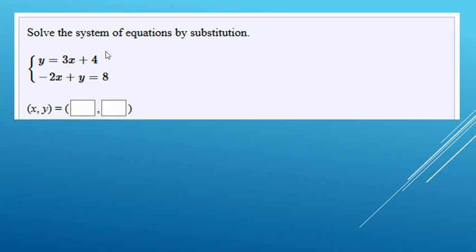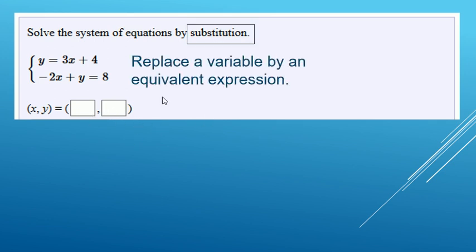All right, so we're going to solve this system of equations by substitution. We're trying to find the ordered pair that makes both equations true. Substitution basically means we're going to replace a variable with an equivalent expression.